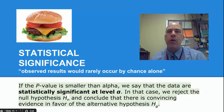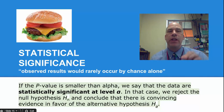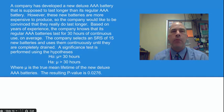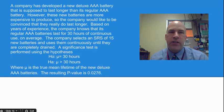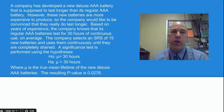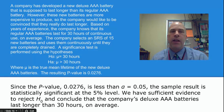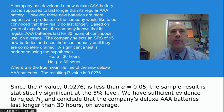If the p-value is smaller than alpha, we say that the data are statistically significant at the level alpha. In that case, we reject the null hypothesis and conclude there is convincing evidence in favor of the alternative hypothesis. For example, with AAA batteries: the null hypothesis is that the battery should last on average 30 hours. We took a sample of 15 batteries, suspecting they actually last longer. We found a p-value of 0.0276, which is less than 5% — a common alpha. So the results are statistically significant, and we have sufficient evidence to reject the null hypothesis and conclude that batteries last more than 30 hours on average.